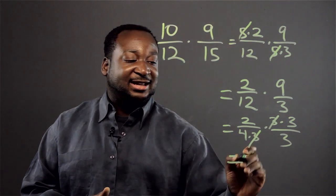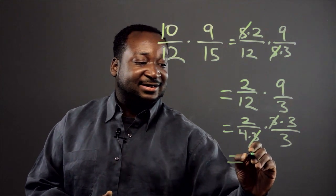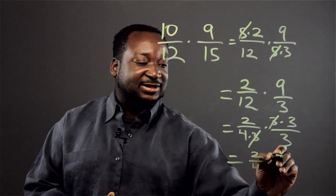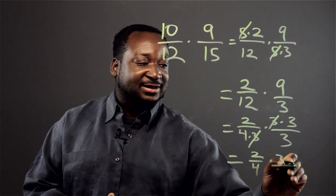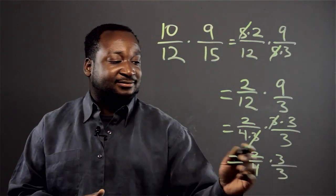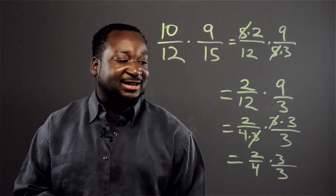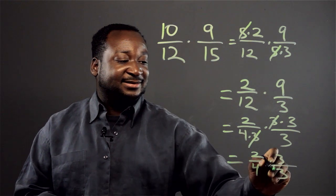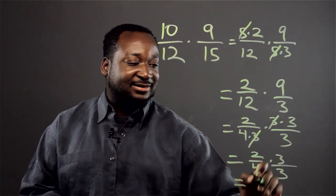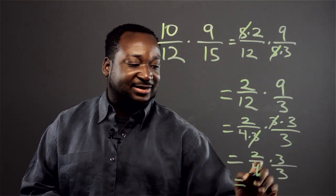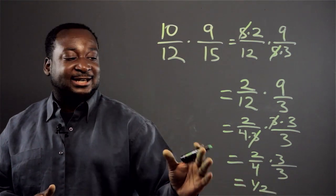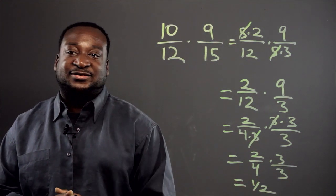And we're left with 2 over 4 times 3 over 3. And of course this cancels and you're left with one half. And that's how you cross simplify.